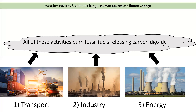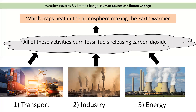So these three things — transport, industry, and energy — all burn fossil fuels like coal, oil, and gas, and that releases carbon dioxide into the atmosphere, that bubble of gas that surrounds the world. Carbon dioxide traps the heat in the atmosphere, and that's what makes the earth hotter.